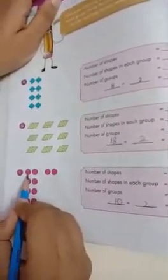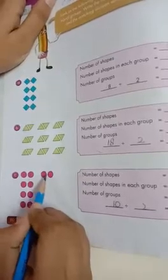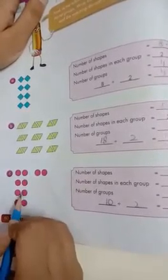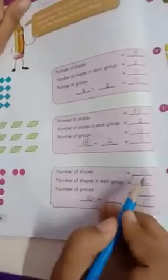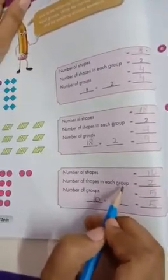After this, we will count the number of shapes: one, two, three, four, five, six, seven, eight, nine, ten. How many shapes are there? Ten.